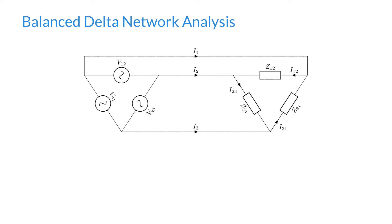Another distinction: when we looked at the star network in our previous video, we said that the phase current — the current that flows through the phase — is equal to the current that flows through the line. But in a delta network that isn't the case. We can't say the phase current equals the line current. You might have seen the identity that the line current is equal to root 3 times the phase current, but not been sure where that root 3 comes from. We'll see why later on.